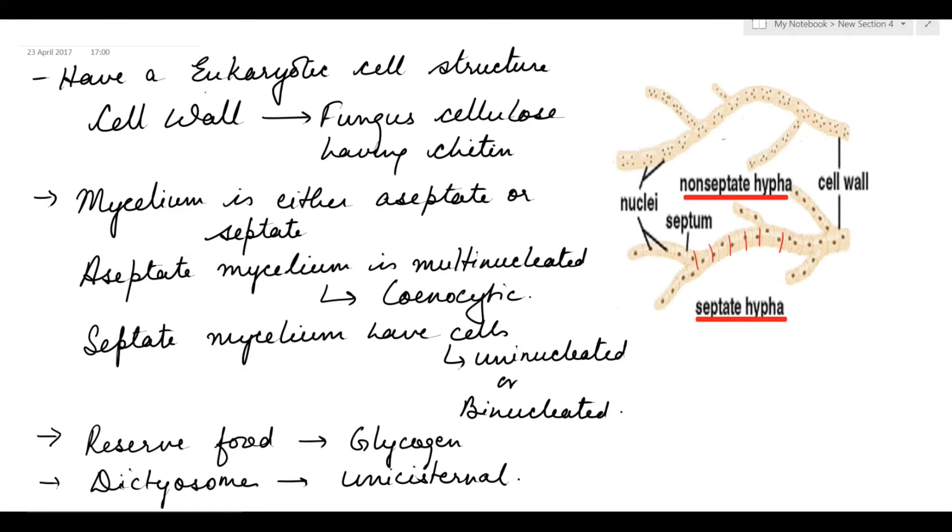Fungi have a eukaryotic cell structure with a well-defined nucleus and membrane-bound organelles. The cell wall is made up of fungus cellulose containing chitin. The fungal mycelium is either aseptate or septate, meaning partition walls are either absent or present.